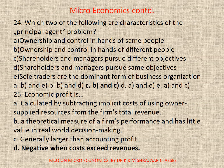Question 24. Which two of the following are characteristics of the principal-agent problem? Correct option is C, that is B and C: B. Ownership and control in the hands of different people. C. Shareholders and managers pursue different objectives.